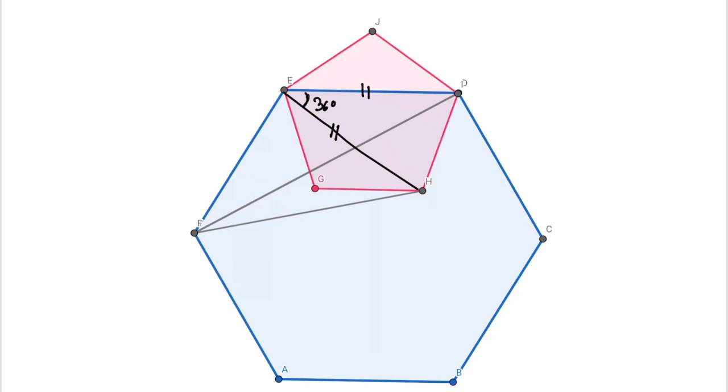And since ABCD is a regular hexagon, so we can say EF equals ED equals EH.